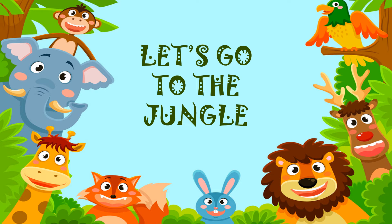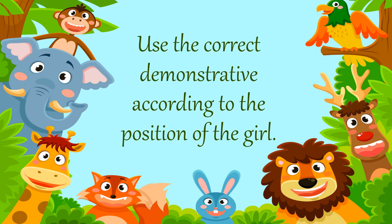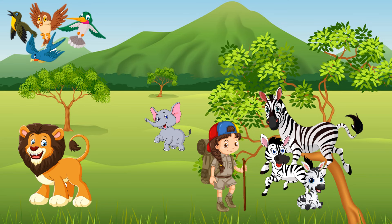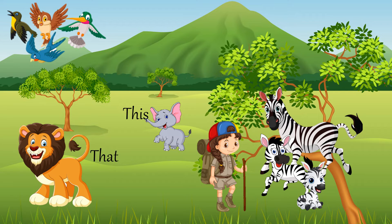Okay, let's go to the jungle and have some fun. Use the correct demonstrative according to the position of the girl. Look at the girl. What do you think about the elephant? Is it near or far? It's near the girl and it's only one, so I use 'this.' What about the lion? It's only one and it's far, so I use 'that.' What about the zebras? They are more than one and they are near, so I use 'these.' What about the birds? They are more than one but they are far, so I use 'those.'